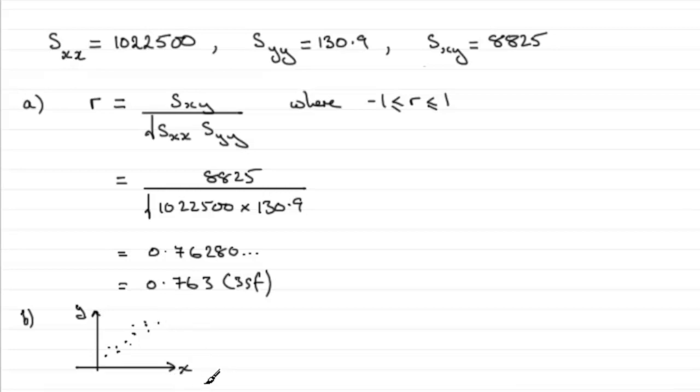Now remember that X represents the attendance, let's just mark that in, and Y was the number of goals, just put that up there, number of goals.